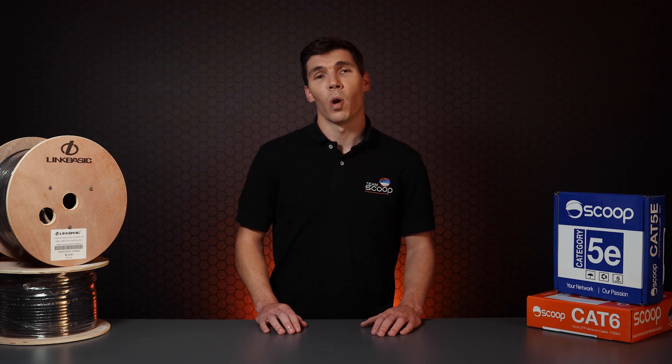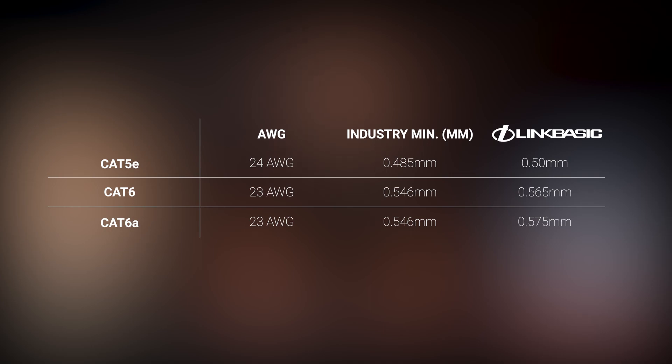Ethernet standards dictate that twisted pairs should be made from pure copper. Vertical and horizontal cable installation should be done with solid core cable, whilst fly or patch lead should use stranded copper for more flexibility. Thickness is outlined using the American Wire Gauge Standard, or AWG for short, which determines the minimum core diameter of each wire. Scoop's Link Basic cables are made from pure copper at the thickest possible variant, which translates into complete peace of mind that you'll get the best performance out of your hardware. For Cat5e it's 0.5mm, Cat6 is 0.565mm, and Cat6a is 0.575mm. This is why we're able to confidently recommend using Link Basic cable for every installation.